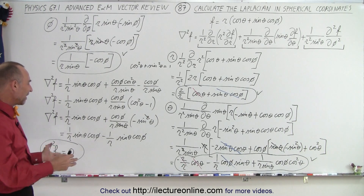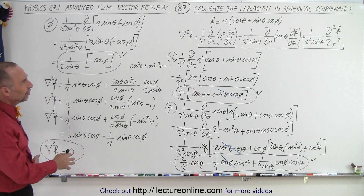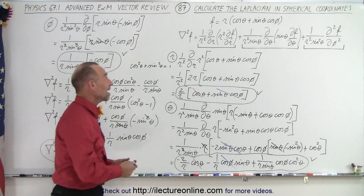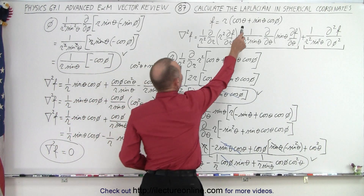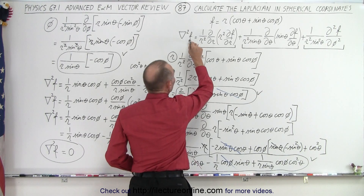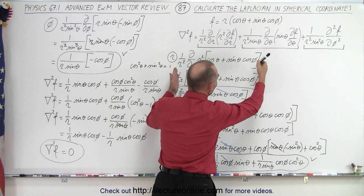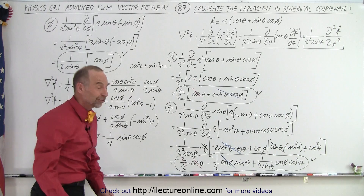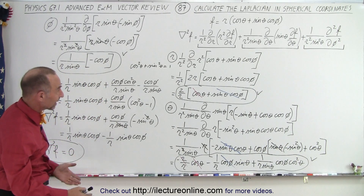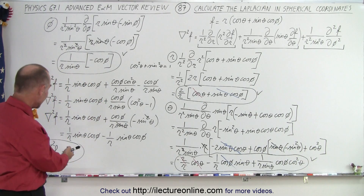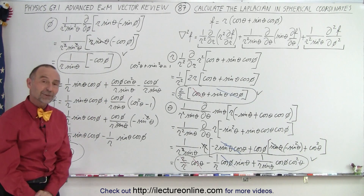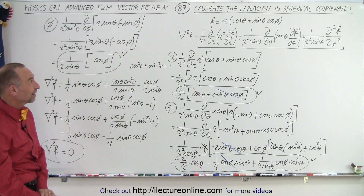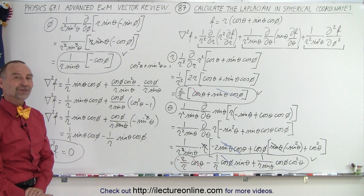It's not so much that the answer was important — I think it's the methodology. When you see a scalar function and you want to take the Laplacian in spherical coordinates, you simply work through the process of taking all those partial derivatives and multiplying things out. In the end, the whole thing added up to zero. And that is how we take the Laplacian in spherical coordinates.